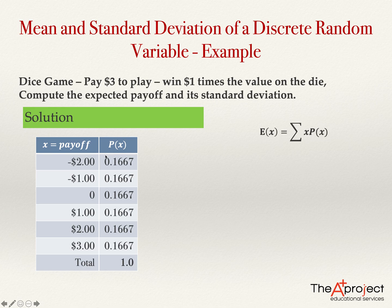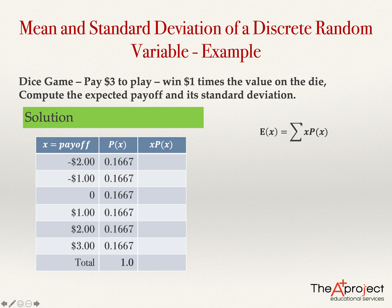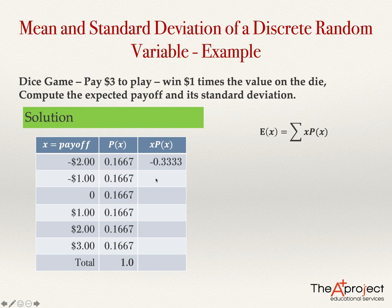For example, for the value minus two, we compute minus two times the probability. It will be a good idea to make another column for x times P(x). Minus two times 0.1667 gives negative 0.3333. Next, negative one times 0.1667 gives negative 0.1667. Zero times 0.1667 gives zero. And one times 0.1667 gives positive 0.1667.